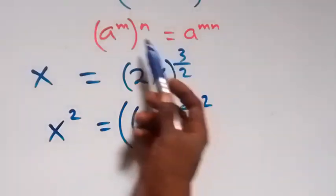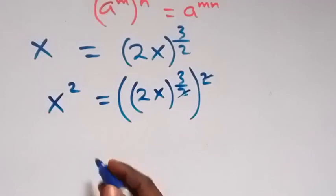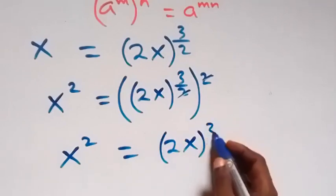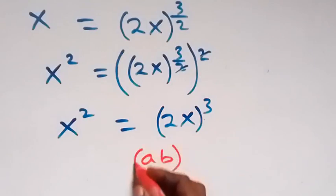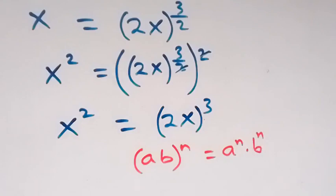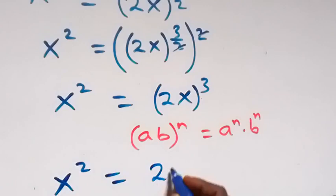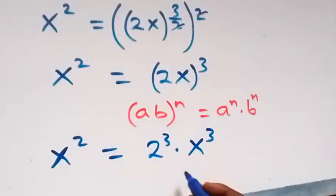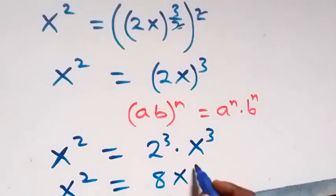Applying the law again — powers multiply — the 2 times 3 over 2 cancels to 3, and we have x squared equals to 2x raised to power 3. Then, applying the law that A times B raised to power n equals A raised to power n times B raised to power n, the right-hand side becomes 2 raised to power 3 times x raised to power 3. Since 2 cubed is 8, we have x squared equals to 8 times x cubed.